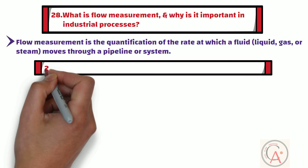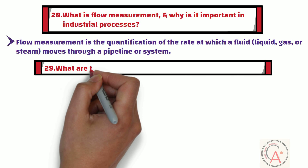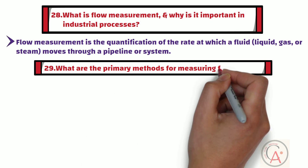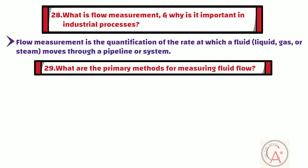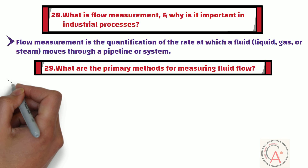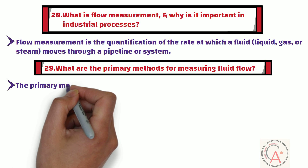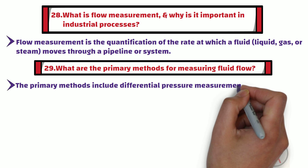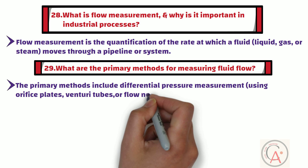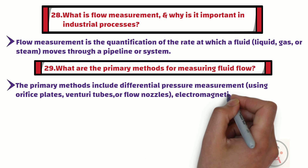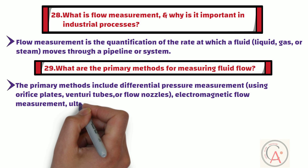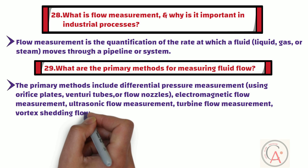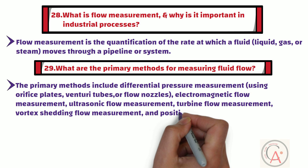The 29th question is: what are the primary methods for measuring fluid flow? The primary methods include differential pressure measurement using orifice plates, venturi tubes, or flow nozzles, and electromagnetic flow measurement, ultrasonic flow measurement, turbine flow measurement, vortex shedding flow measurement, and positive displacement flow measurement.